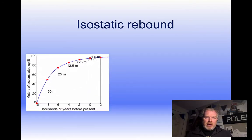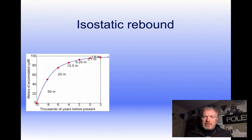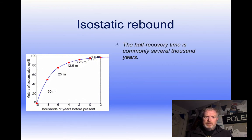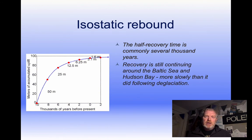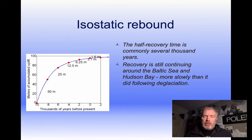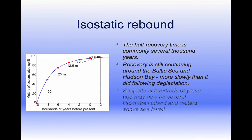Isostatic rebound isn't a straight line. The further the crust is depressed, the quicker it'll rebound; the closer it gets back to equilibrium, the slower that rate becomes. It will take several thousand years for this to happen. We still see this uplift from the last glacial period — the Baltic, northern Canada, and Scotland are still bouncing out of the sea, still rebounding back to their equilibrium position.